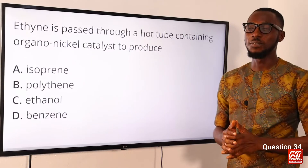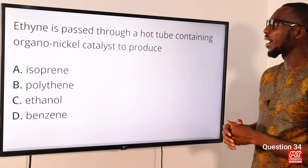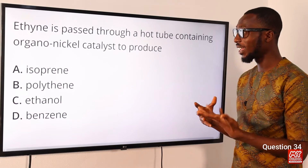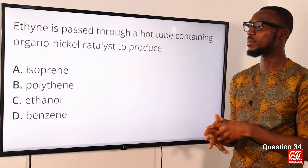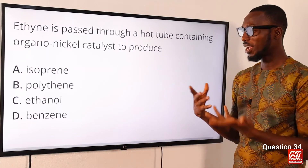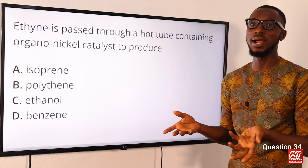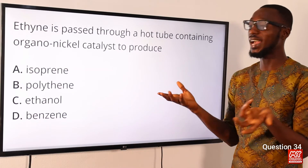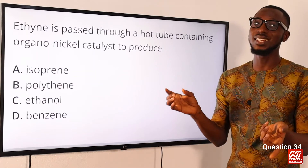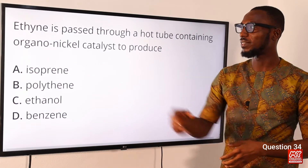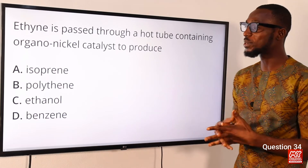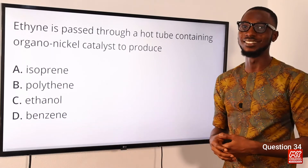Question 34: Ethyne is passed through a hot tube containing an organo-nickel catalyst to produce benzene. This is a reaction that requires three ethyne units and a metal catalyst — here an organo-nickel catalyst is used. The correct option is option D for benzene.